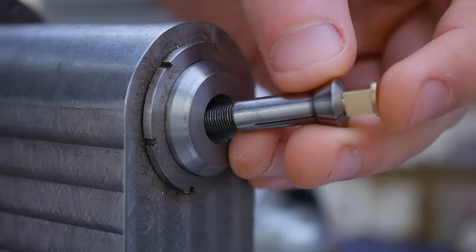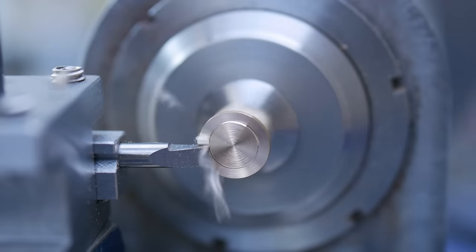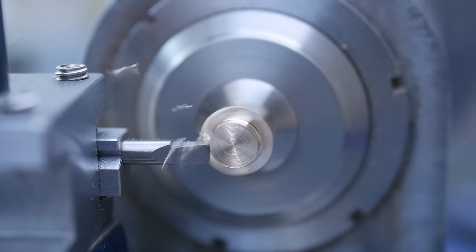After parting the cylinder off, I mount it in a collet in reverse to machine a boss and tap an M2 thread in the bottom, which will allow me to bolt it to a base plate.